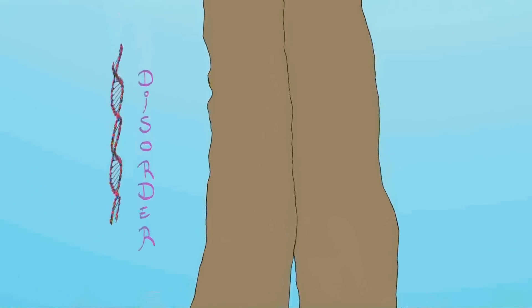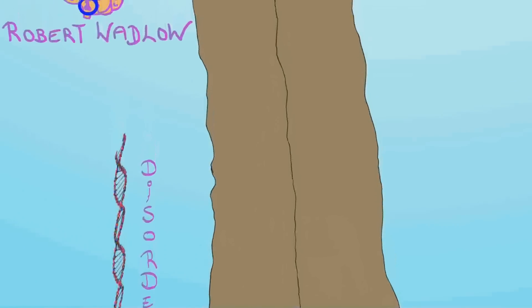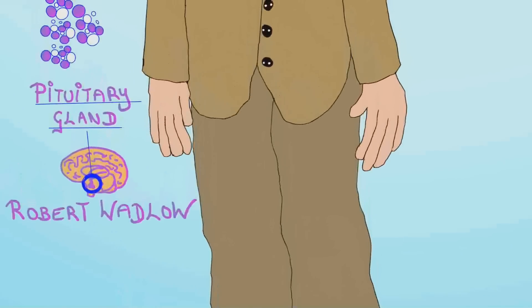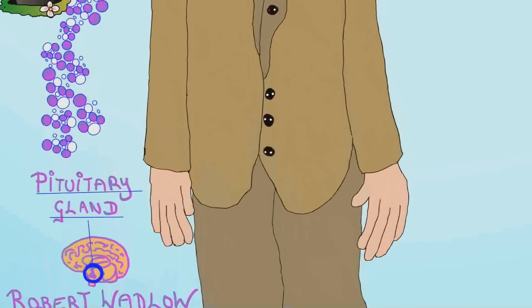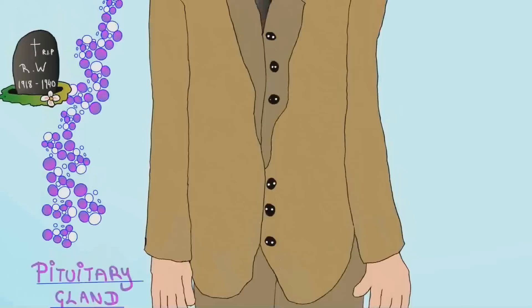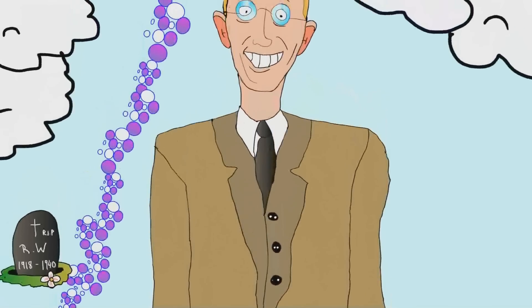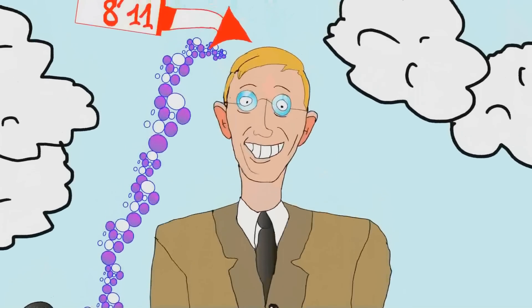Robert Wadlow was a man from the United States in Illinois. He had a pituitary gland disorder in which he had an abnormally high level of human growth hormone his entire life. Sadly he only lived to be 22 years old, but when he died he was a staggering 8 feet 11 inches and wore a size 37 shoe.